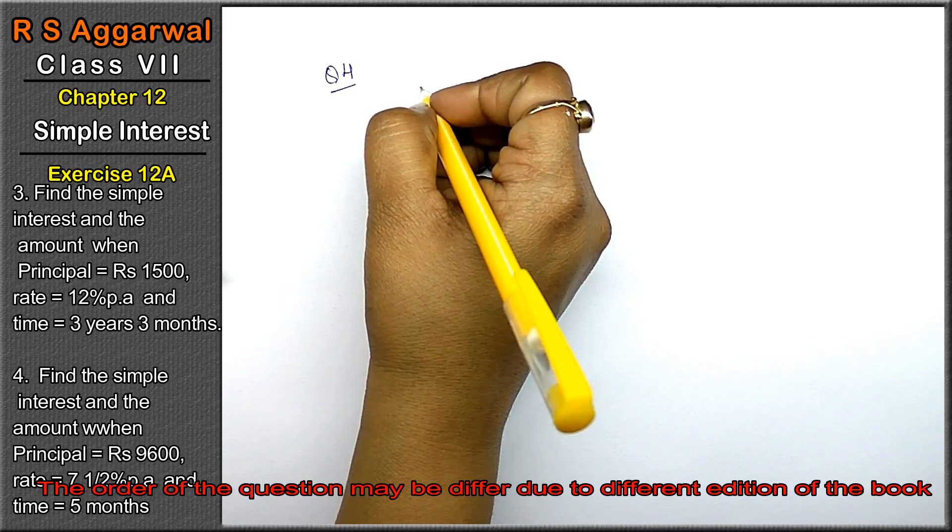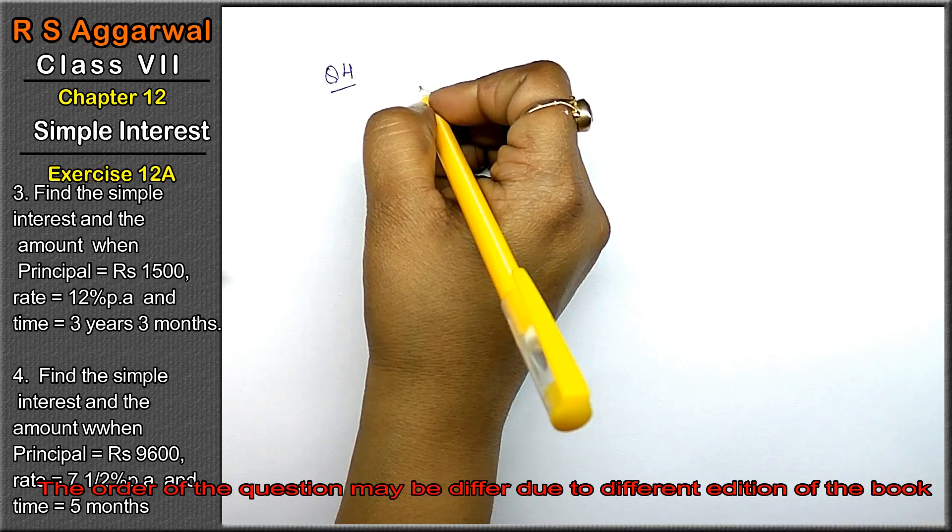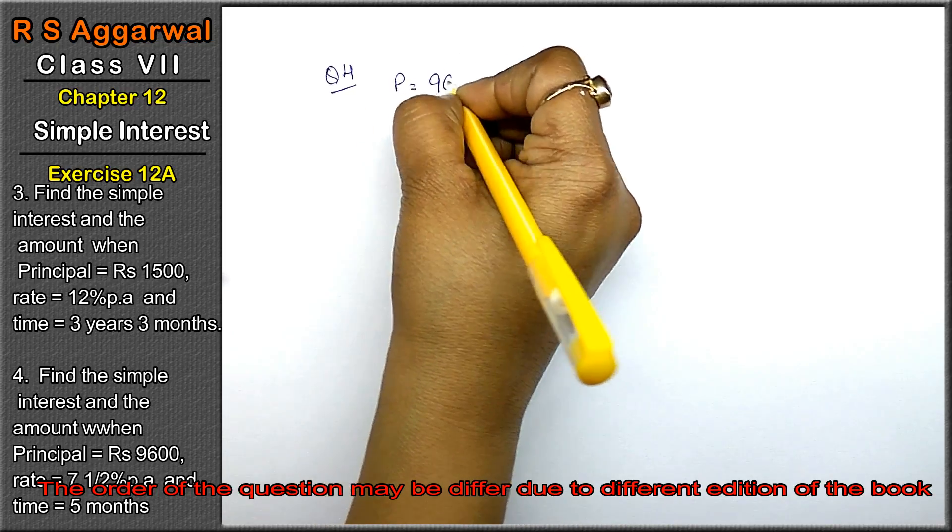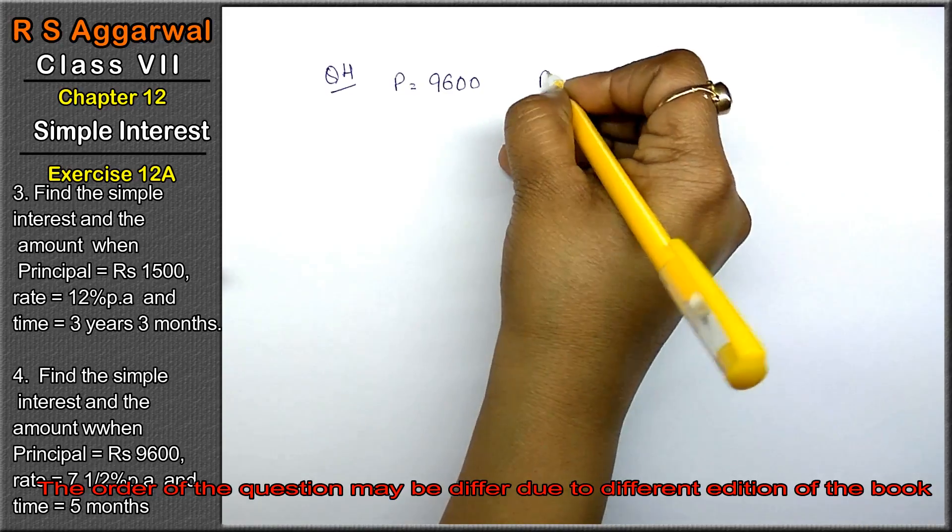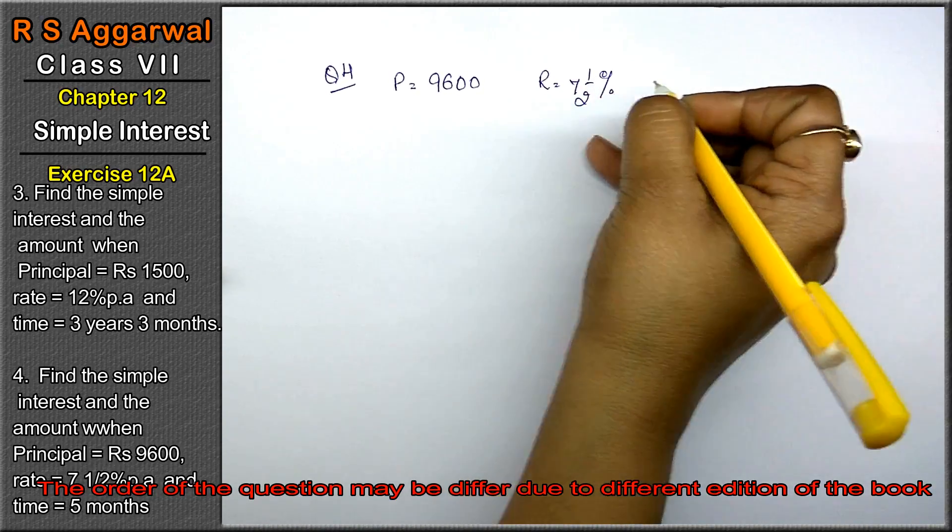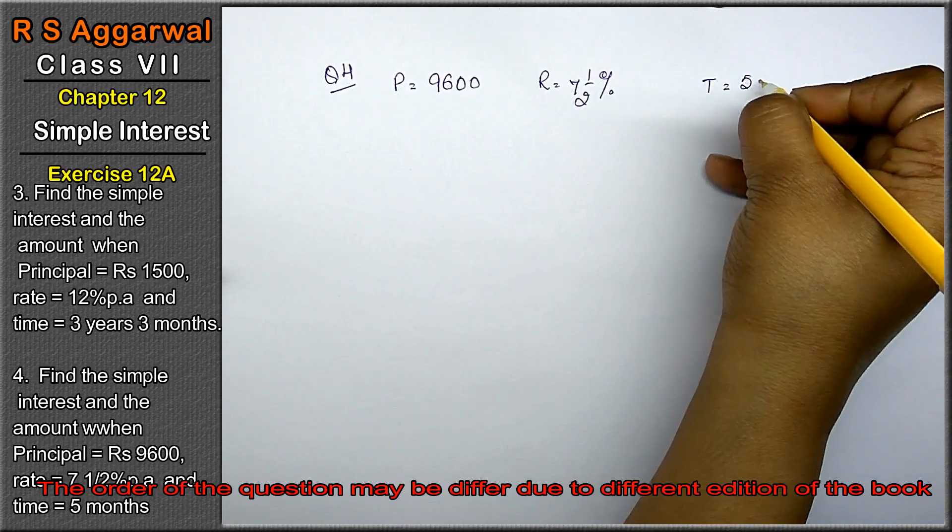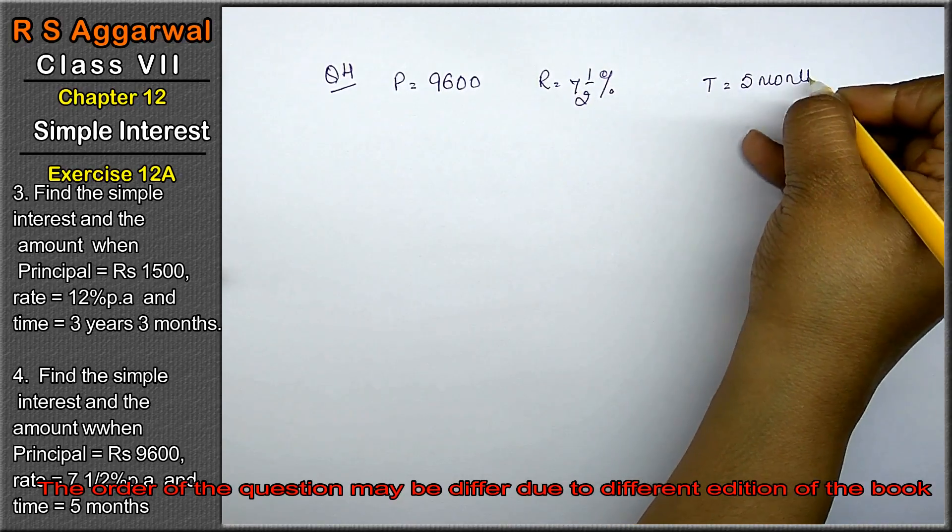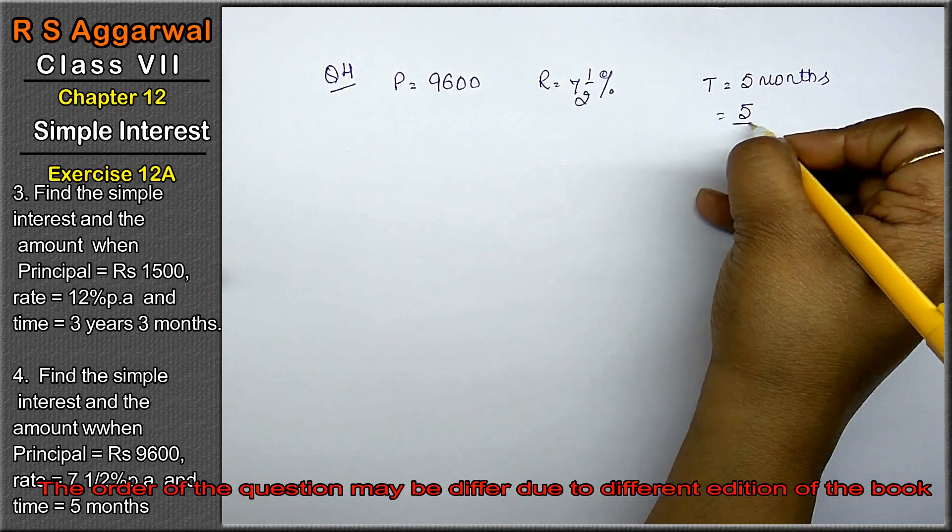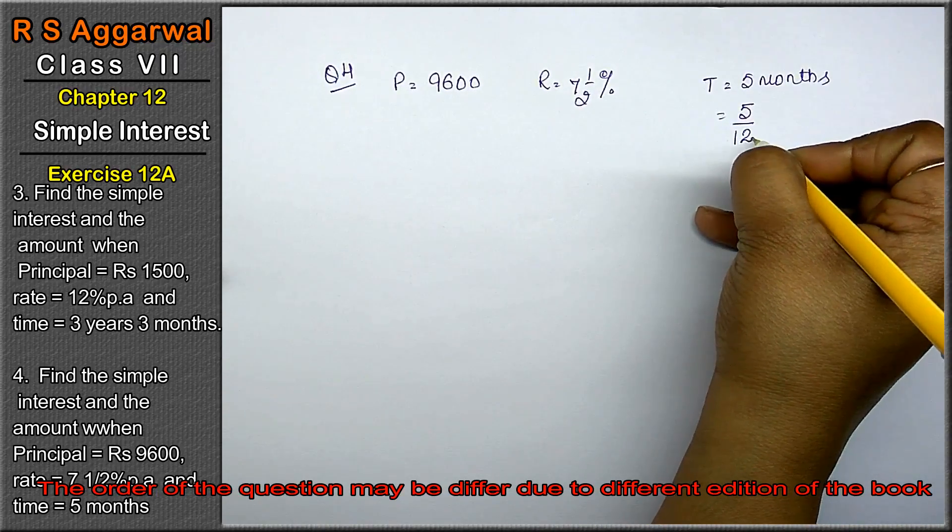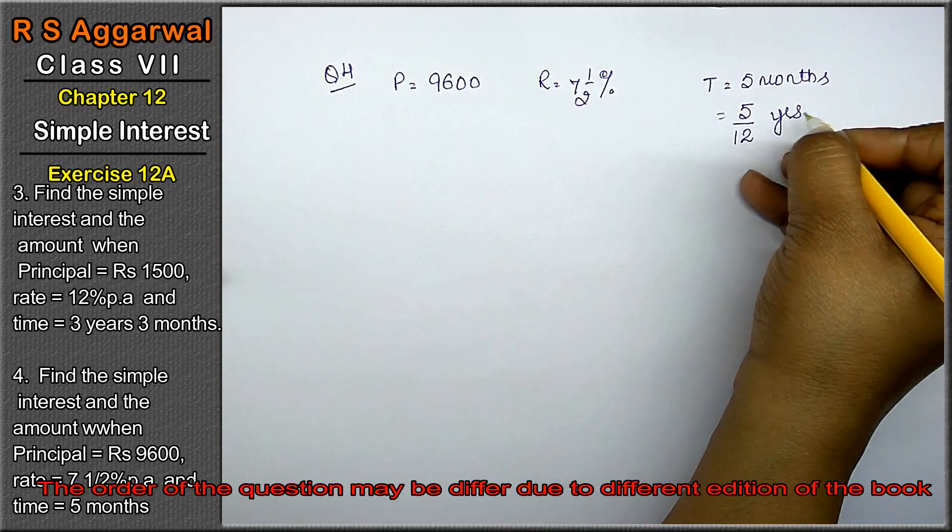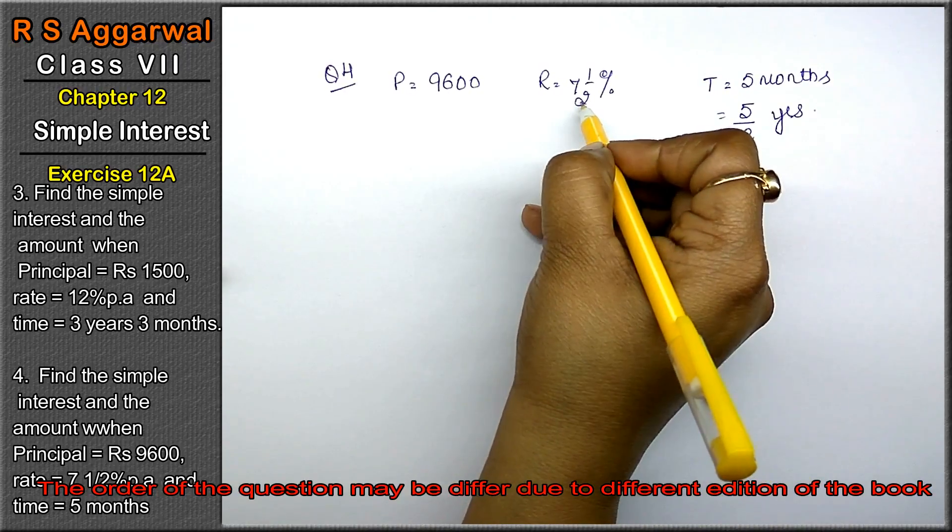Question number fourth: Find the simple interest and the amount when principal equals 9600, rate equals 7 whole 1 upon 2% per annum, and time is 5 months. 5 months in years is 5 upon 12 years.